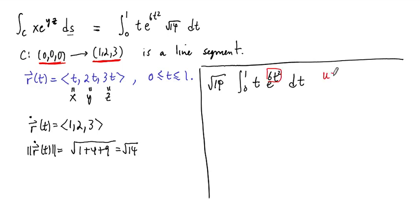This can be done by a u sub, so this is fairly simple. But if u is equal to 6t squared, then du is equal to 12t. So that means we need a 12 here. We take away a 12 out here. Usual shenanigans here. This is calc 3, so we're used to all this. All right, when t is 1, u is 6. When t is 0, u is 0.